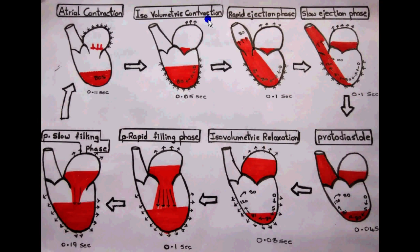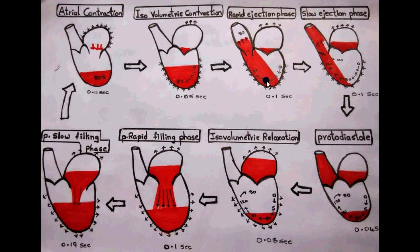During this stage the atria relax slowly as they are receiving blood from the lungs. The pressure in the ventricles reaches a point — maybe 81 millimeters of mercury — which is slightly higher than the pressure in the aorta, and this causes the semilunar valves to open and rapidly eject blood from the ventricle to the aorta. This phase is called the rapid ventricular ejection phase.